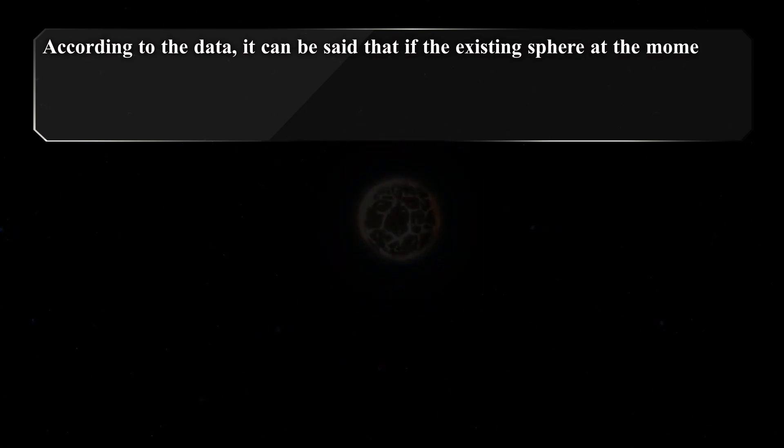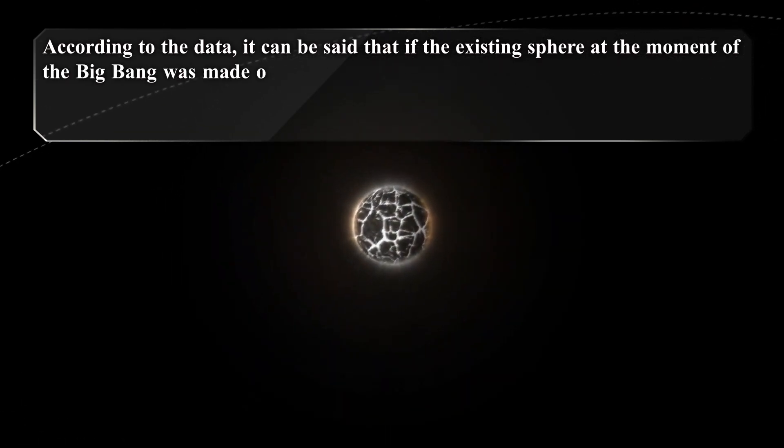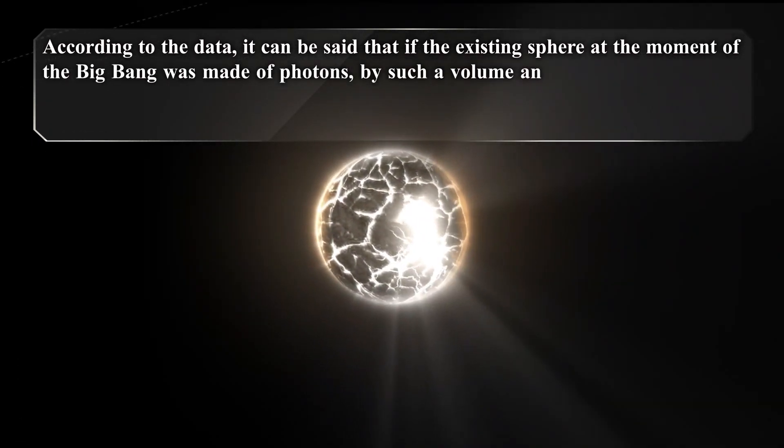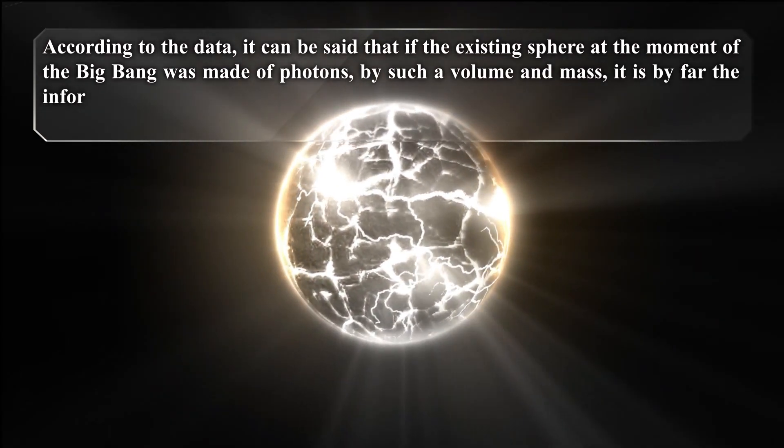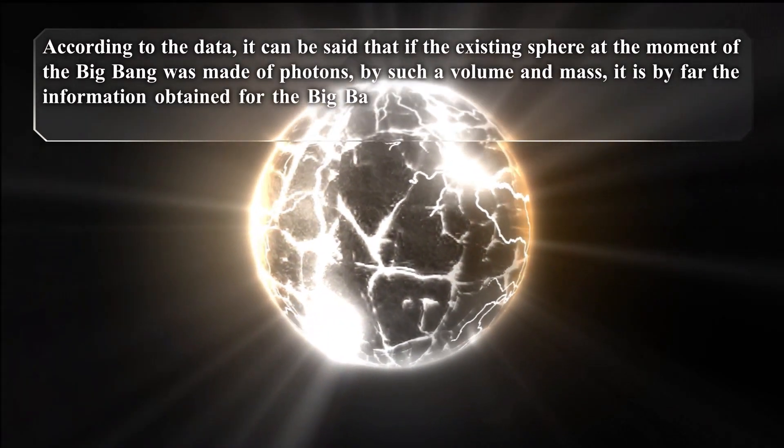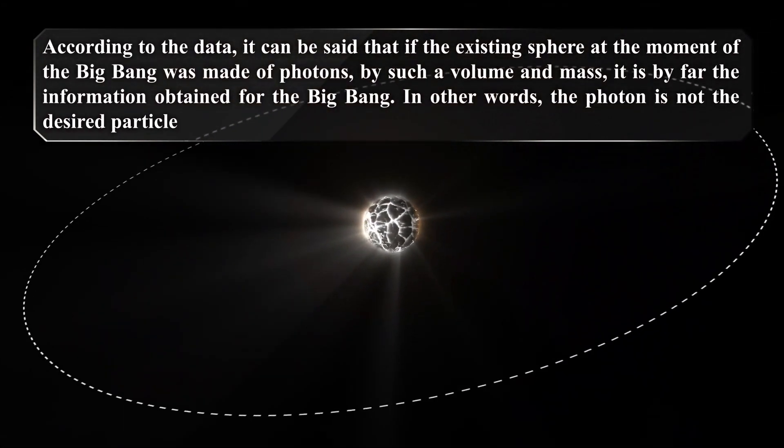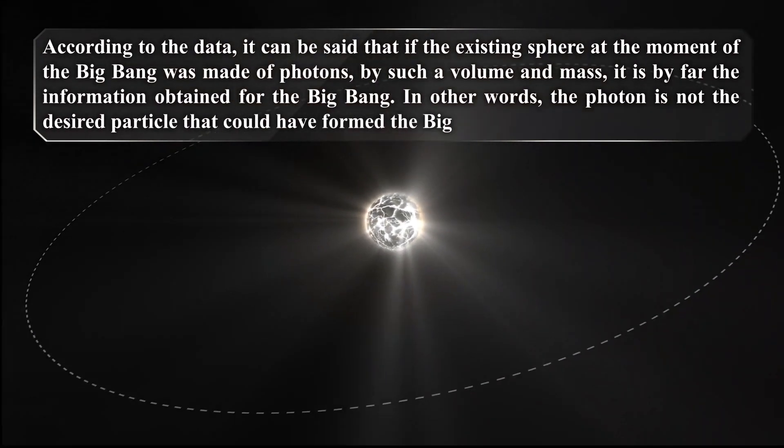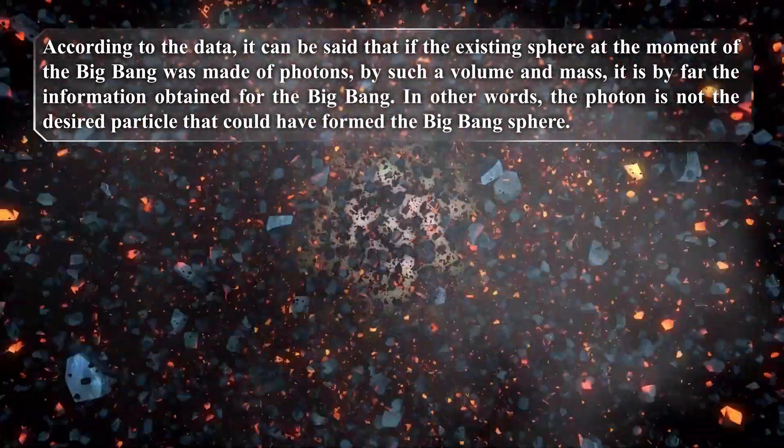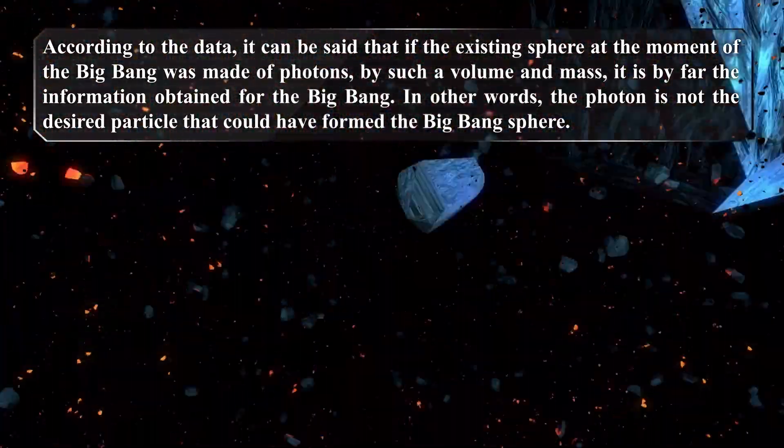According to the data, it can be said that if the existing sphere at the moment of the Big Bang was made of photons, by such a volume and mass, it is by far different from the information obtained for the Big Bang before. In other words, the photon is not the desired particle that could have formed the Big Bang.